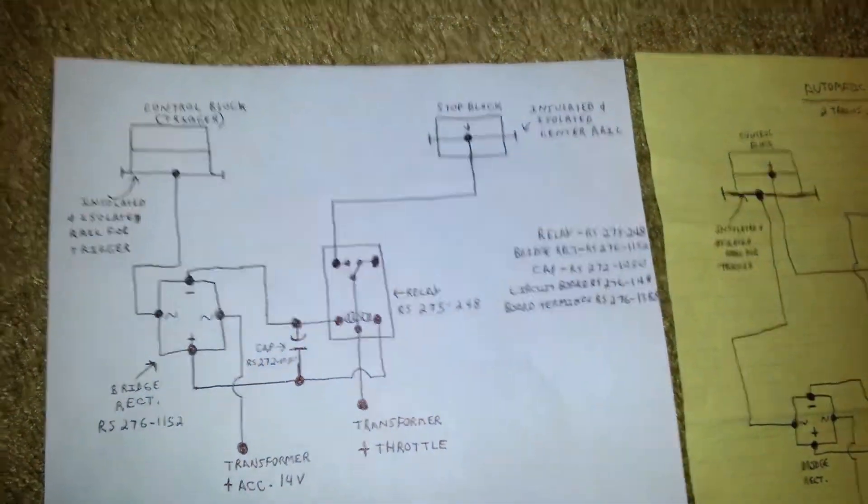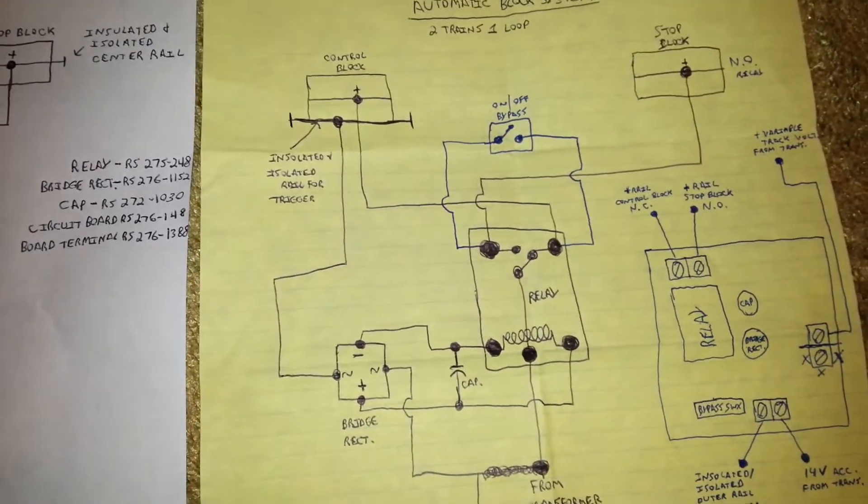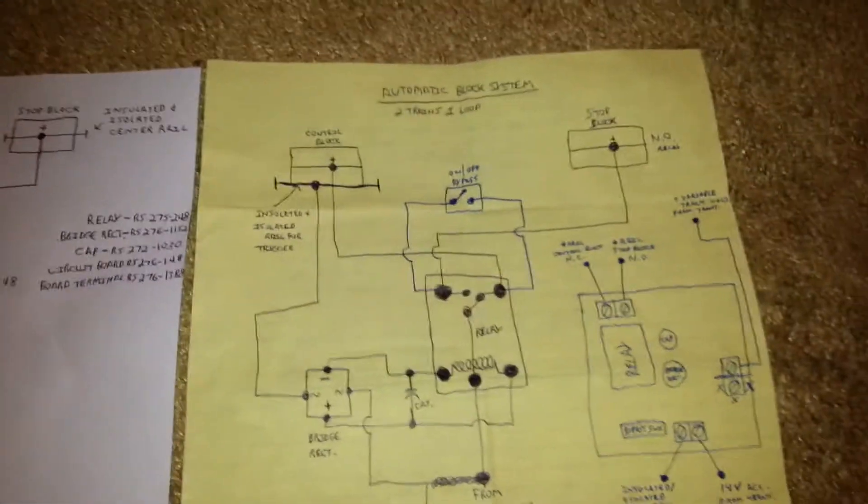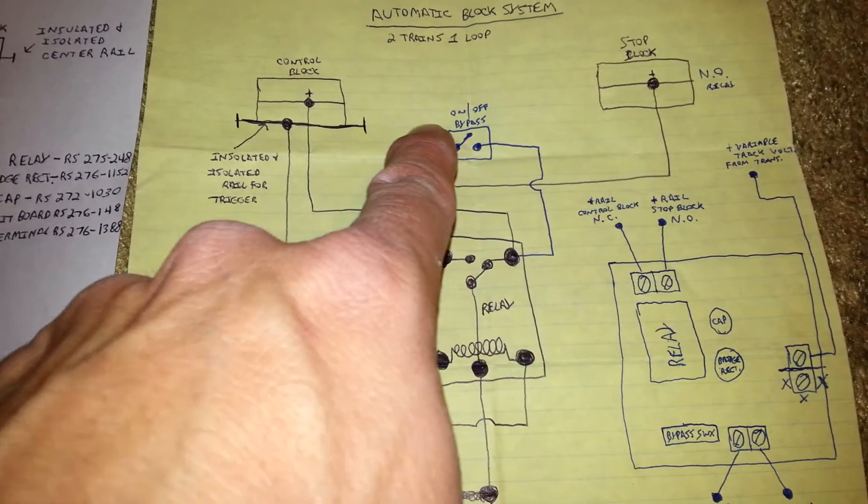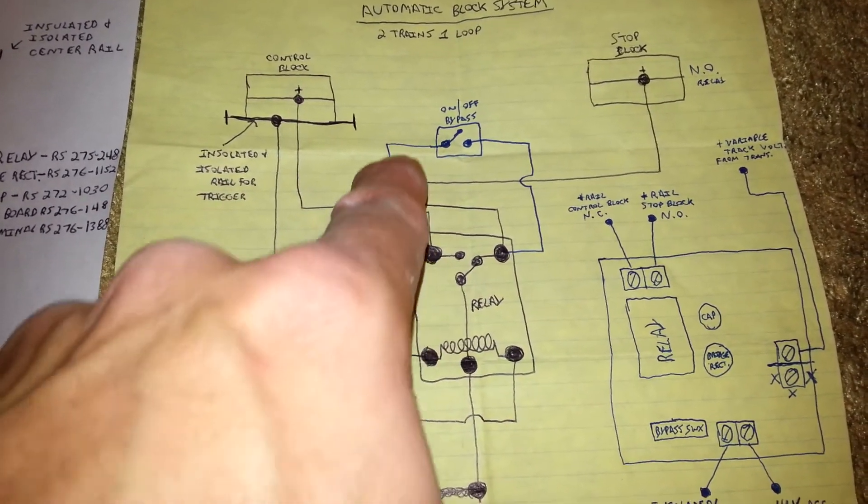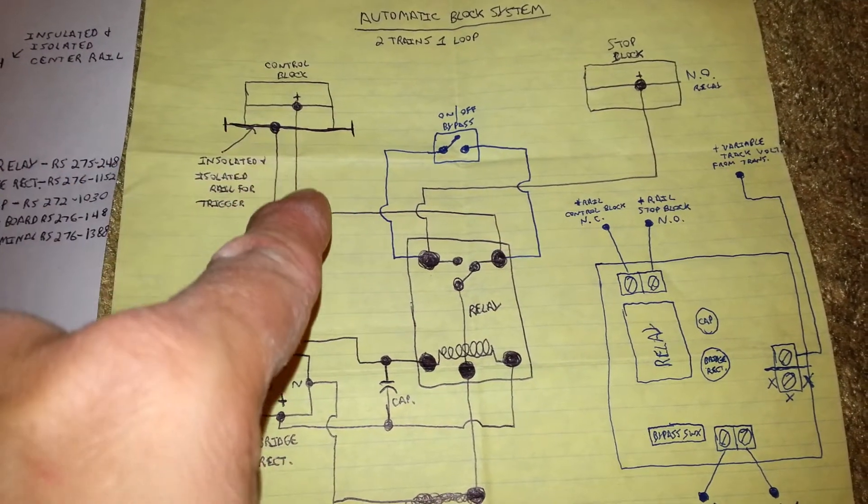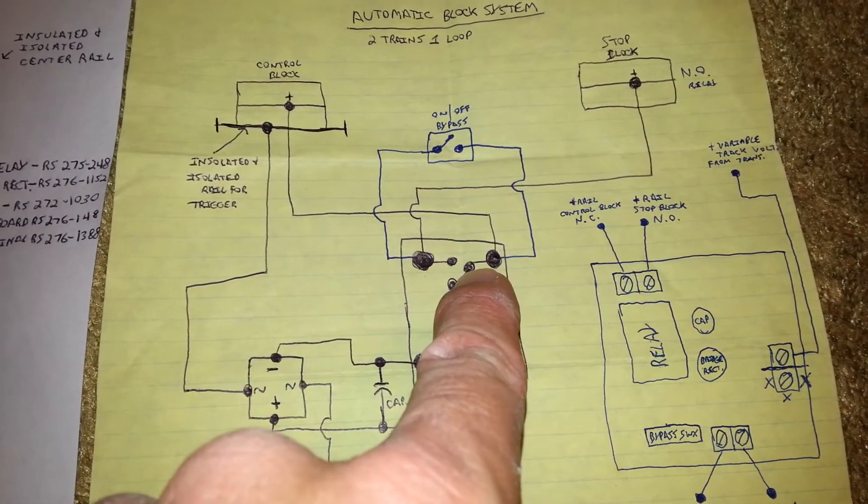Guys, I'm going to attempt to explain this a little better. This other schematic can look a little confusing because I added this whole bypass circuit in. You can still have your automatic block system work without this switch wired in, and without this positive from that center rail coming over to here.